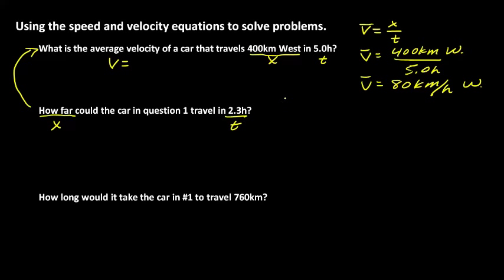Let's rearrange this equation to solve for displacement. Our original equation was velocity equals displacement divided by time. If I want to solve for displacement, I have to get rid of t on the right-hand side. The opposite of division is multiplication, so I simply multiply both sides by t. That gives us the new equation: displacement x is equal to velocity times time. Now we just plug in numbers and solve.